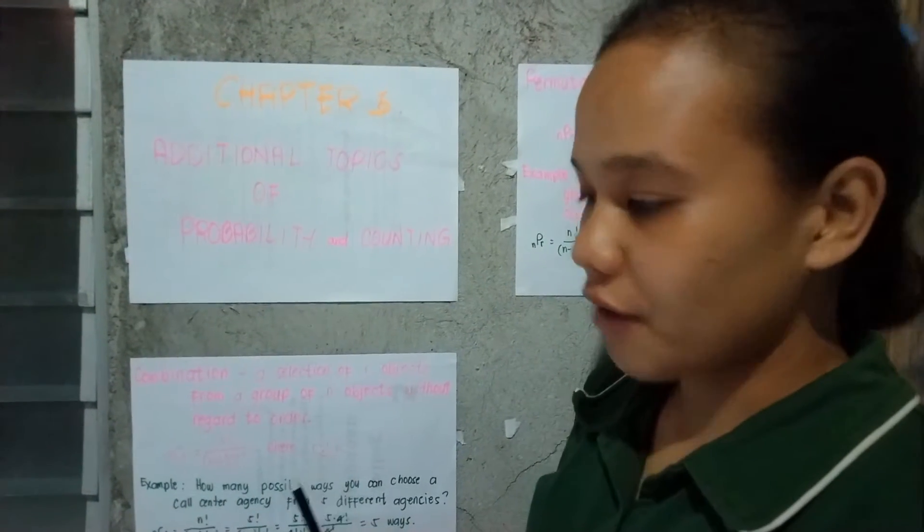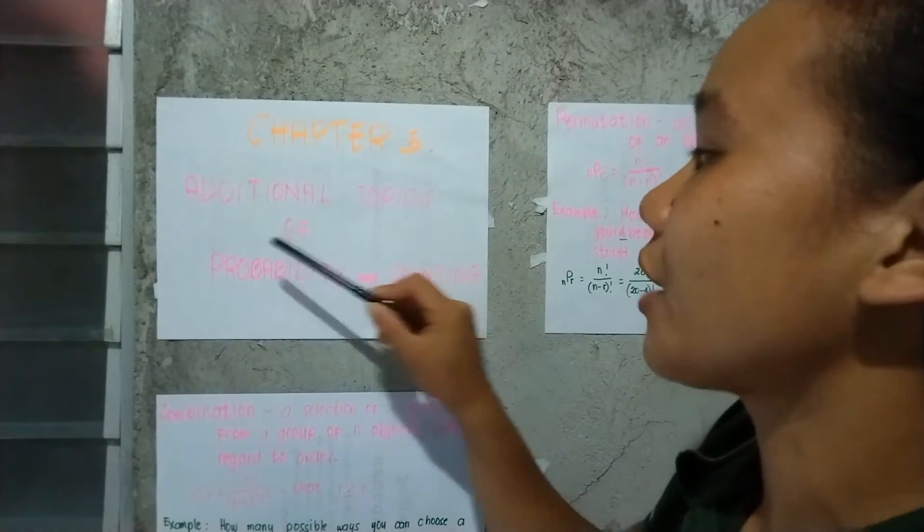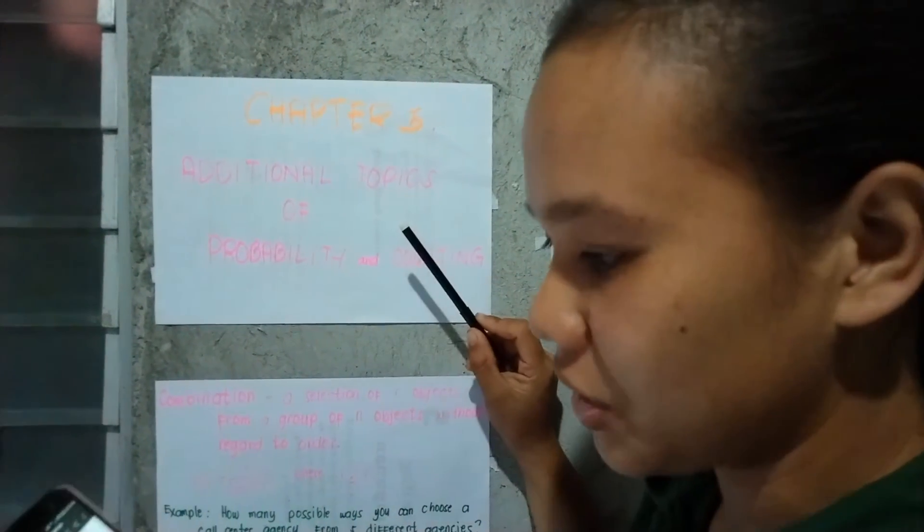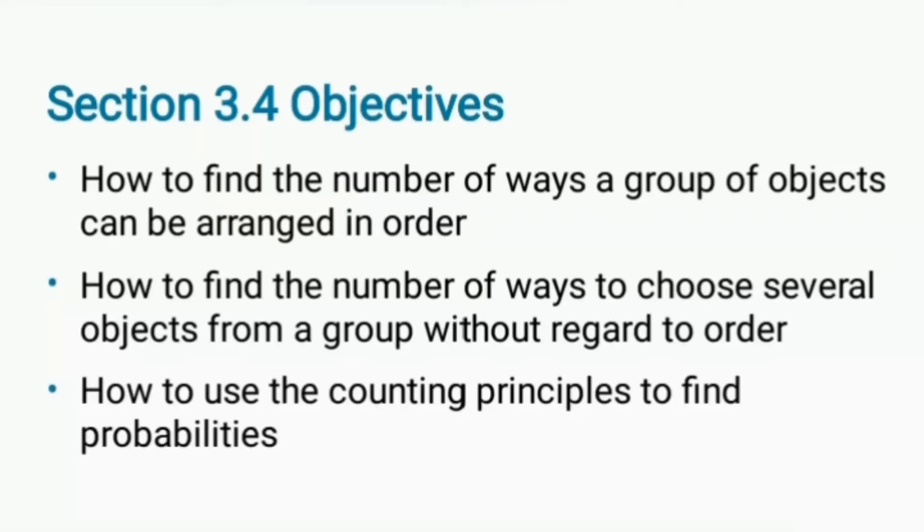Good day everyone, I'm going to discuss Chapter 3: Additional Topics in Probability Distribution. The objectives are: how to find the number of ways a group of objects can be arranged in order, how to find the number of ways to choose several objects from a group without regard to order, and how to use the counting principles to find probabilities.